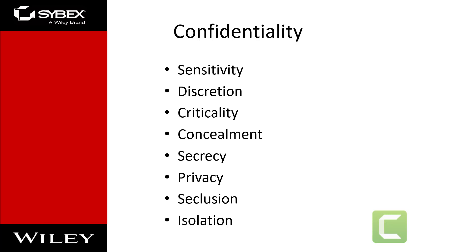Vulnerabilities and risks are also evaluated based on the threat they pose against one or more of the CIA triad principles. It is a good idea to be familiar with these principles and use them as guidelines for judging all things related to security. These three principles are considered the most important within the realm of security.